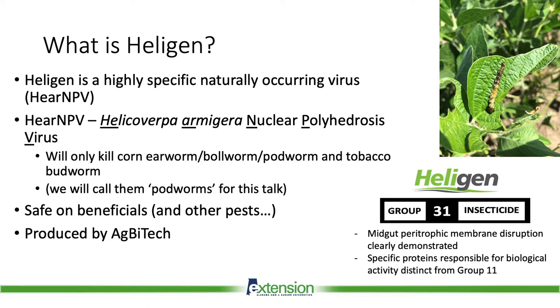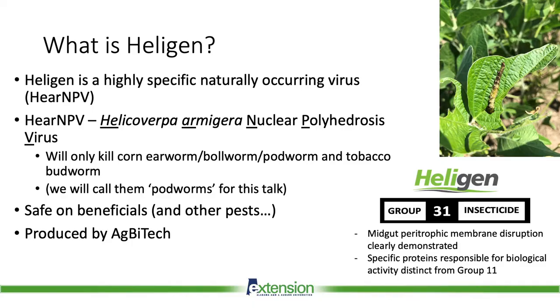One of the important things to remember about this virus is that it is highly specific. It will only control one specific pest, which is the corn earworm — also known as bollworm or soybean podworm. It has several different names. It will also control the tobacco budworm. So that heliothine complex is the only group of species this virus will control. For this talk, since we're talking about soybeans, we'll call them podworms, but just know it is the corn earworm or cotton bollworm — the same animal.